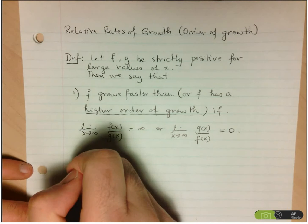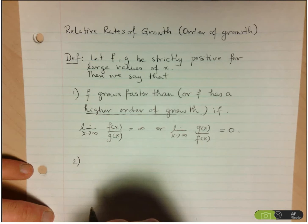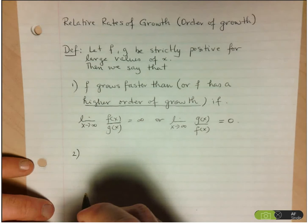Alternatively, they could grow at what we call the same rate, and that would be the example of x and 10x. Even though 10x does grow faster in terms of order of growth, we actually say that they have the same order of growth.